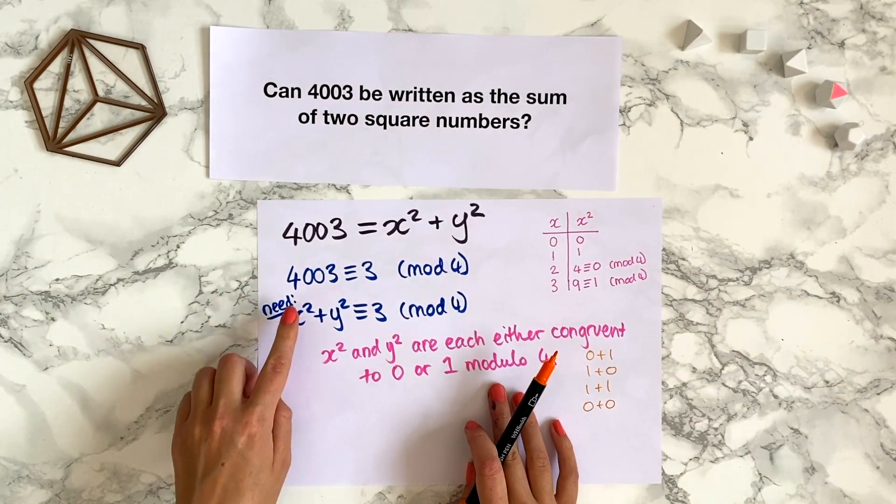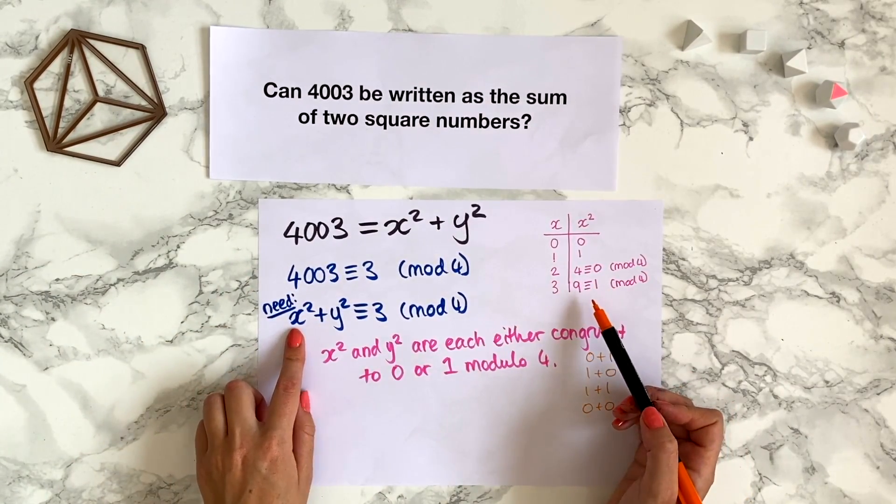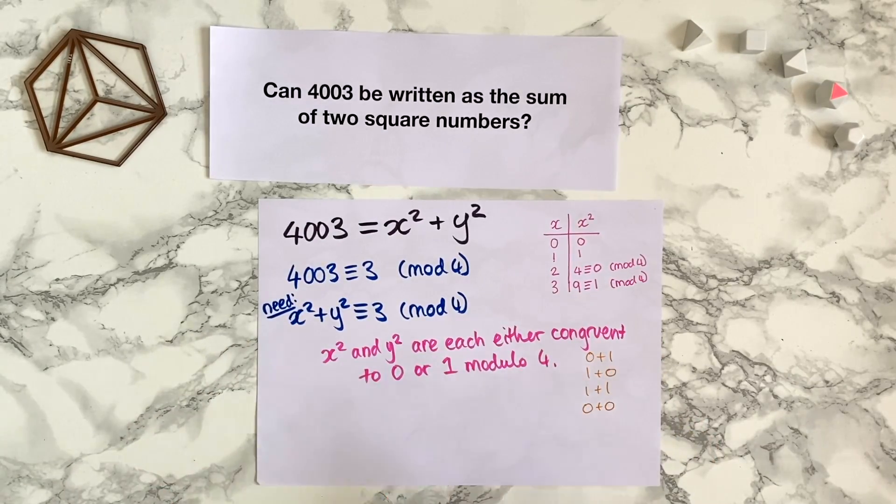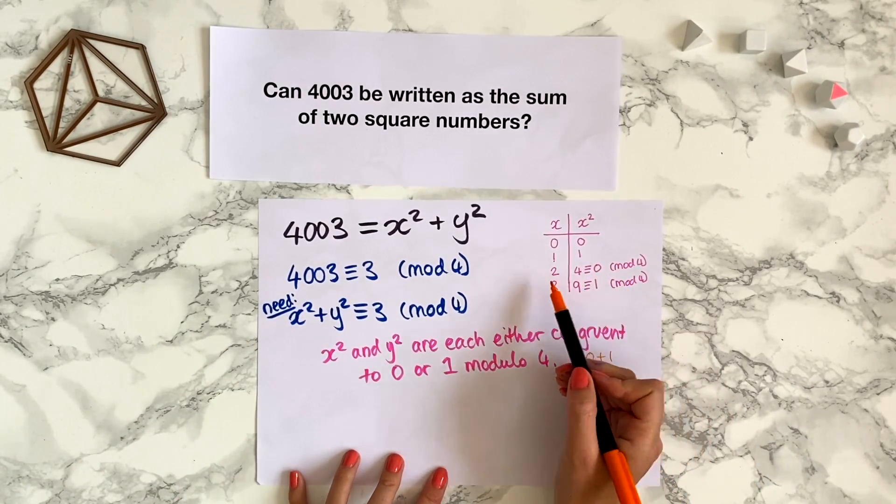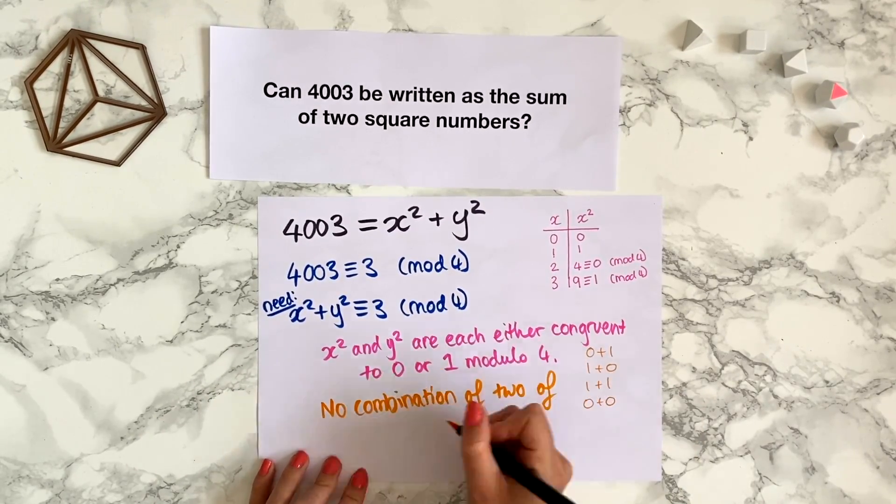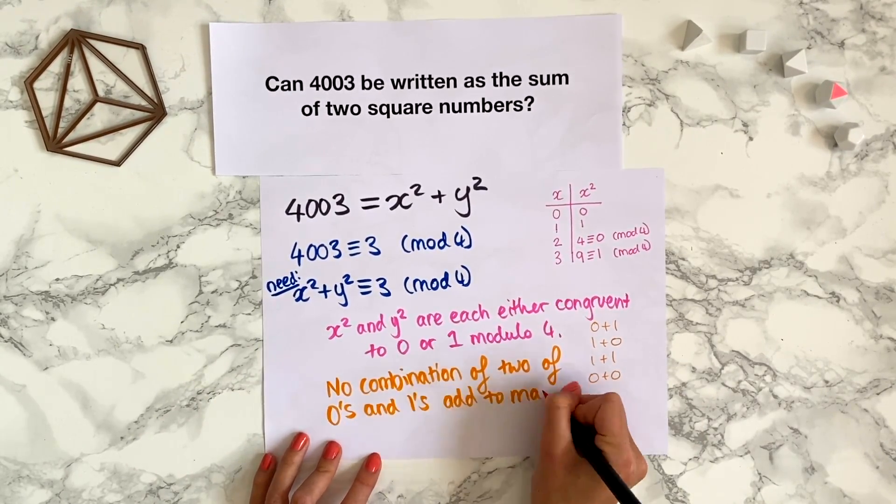But then if we look at the values that square numbers can take modulo 4, it turns out that square numbers can either be 0 or 1, they can't be 2 or 3, just by looking at this table. No combination of 2 of 0 and 1s add together to make 3.